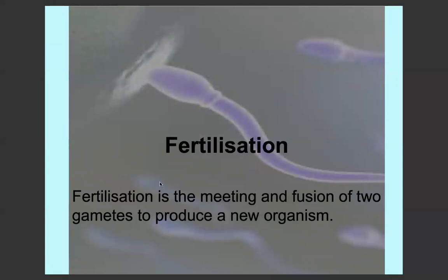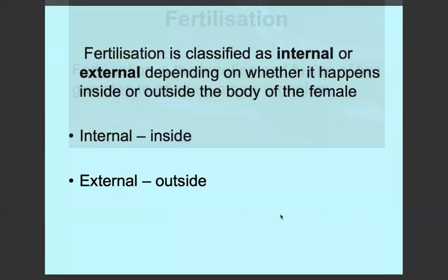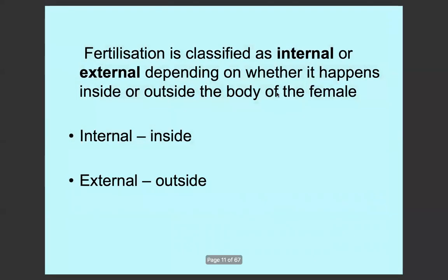Fertilisation is the meeting and fusion of two gametes — the male gamete and the female gamete — to produce a new organism. Fertilisation can be either internal or external. If it happens inside the body it's internal; outside the body it's external.